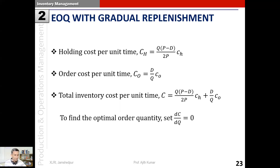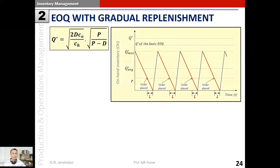To find the optimal order quantity, we set dC/dq equal to zero and get: q* = square root of (2d·co / ch) times square root of (p / (p minus d)). Compared to the basic EOQ formula which has only the first portion, we now have an additional factor. So q* in this model differs from the basic EOQ q* by a multiplicative factor of square root of p divided by (p minus d).